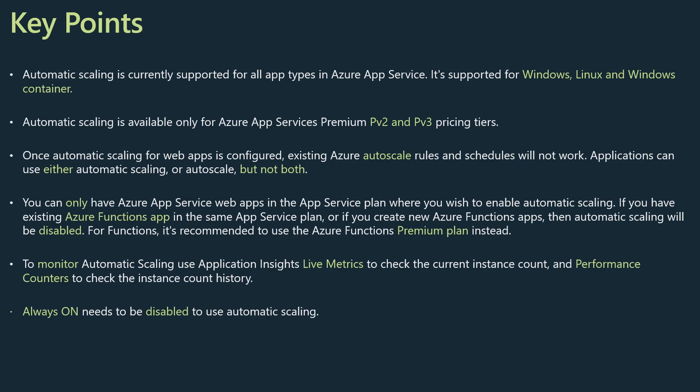You can do either of them, but not both. The other important point is that for the app service plan where you plan to configure automatic scaling, you should only have web apps. If you have an existing function app within the same plan, you will get an error. If you want to use automatic scaling with functions, just go use elastic premium functions because that's exactly what it does. The final point is that you should be disabling the always-on option — once you have automatic scaling turned on, you don't need the always-on setting.